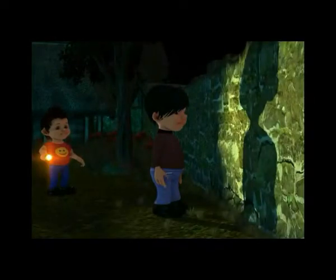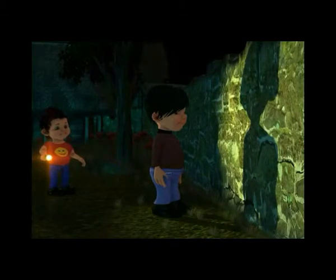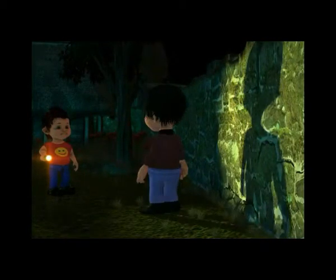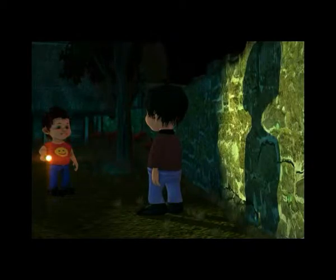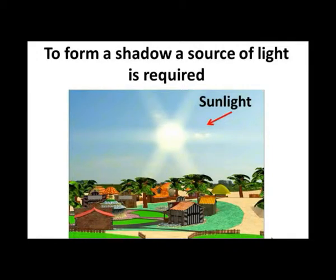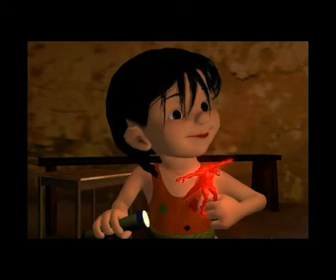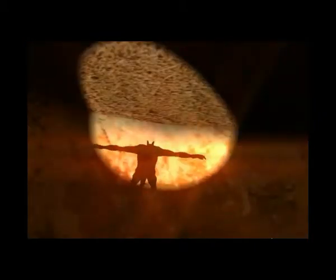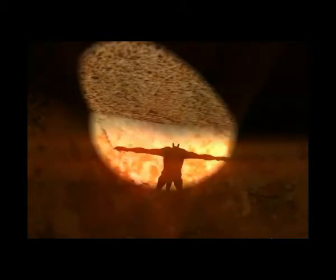How is a shadow formed? When the path of light is obstructed by an opaque object, an area of darkness is created on the side of the object away from the light. One important point: we cannot see the shadow in the dark. To form a shadow, a source of light is required. Here, the girl uses a torch as the source of light to create a shadow.